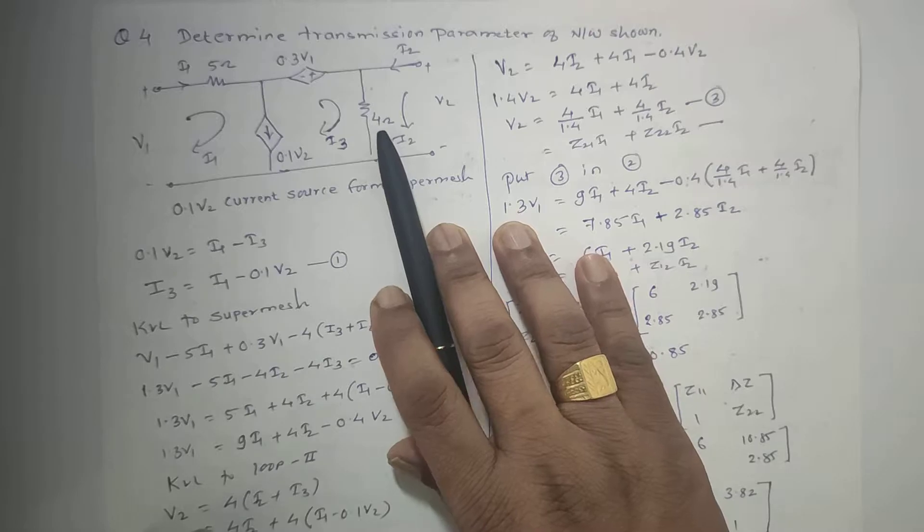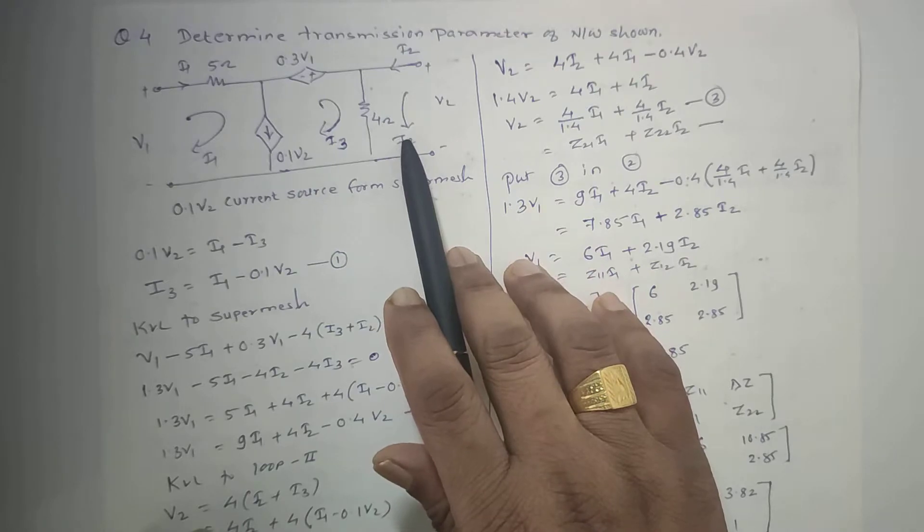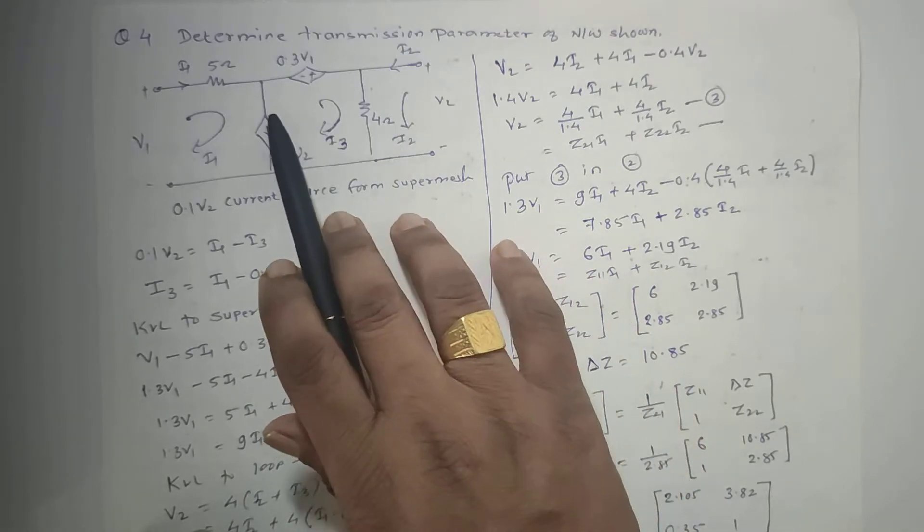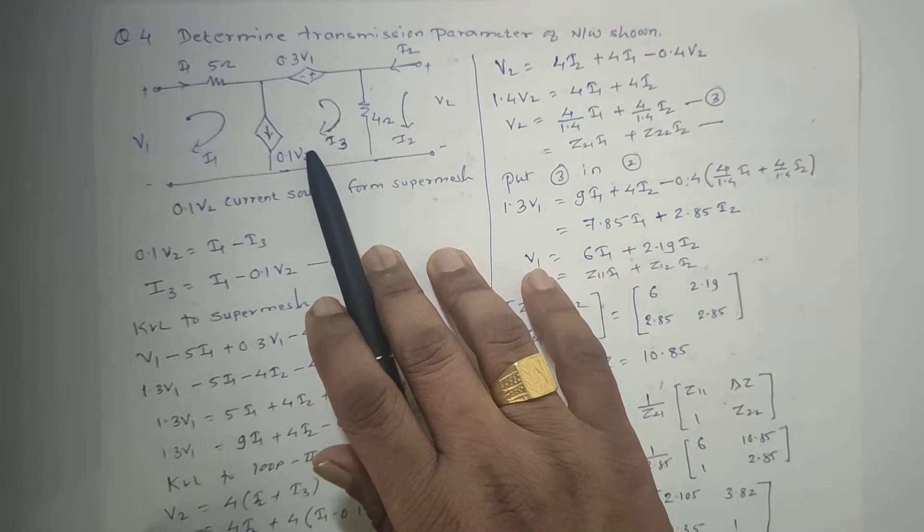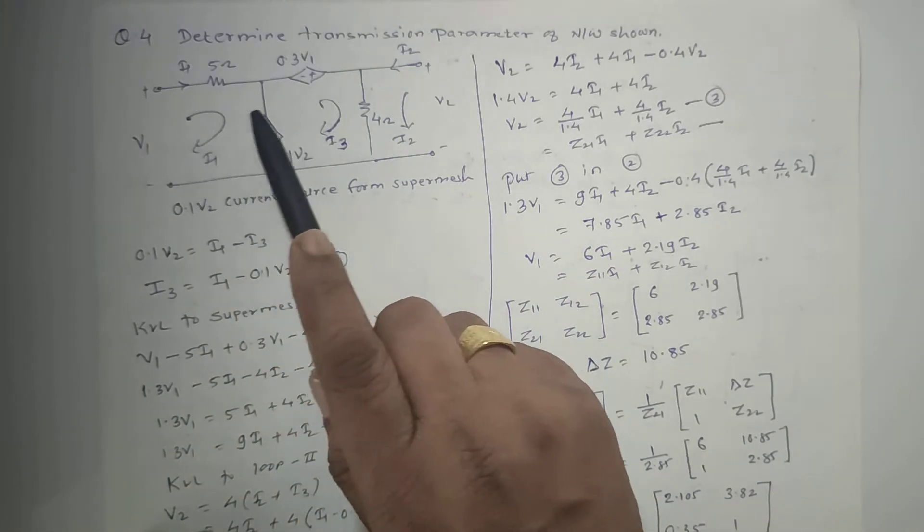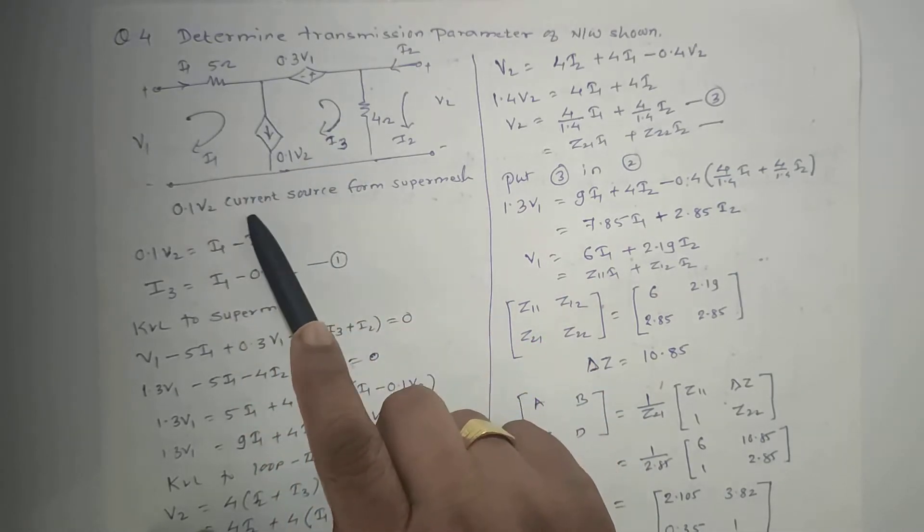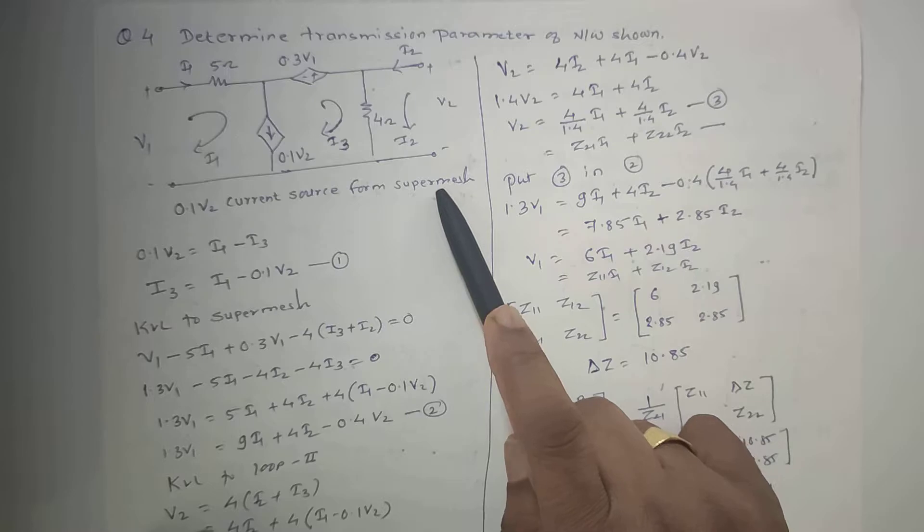We will have current flowing in the first loop as I1, current flowing in the second loop as I2 in anticlockwise direction, and current flowing in the middle loop is I3. Now this current source is common for the two loops and therefore it will form the super mesh. So 0.1V2 current source forms a super mesh.